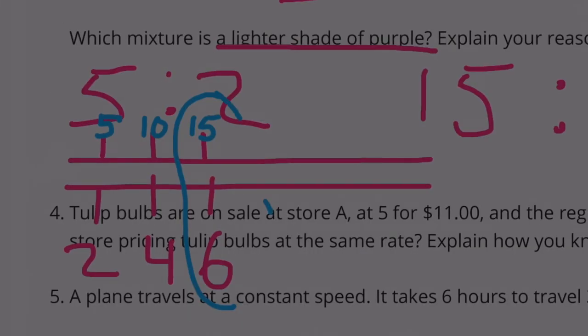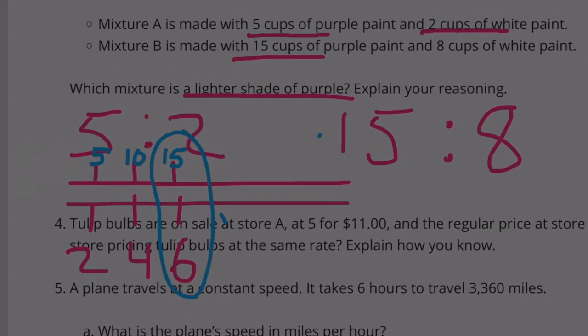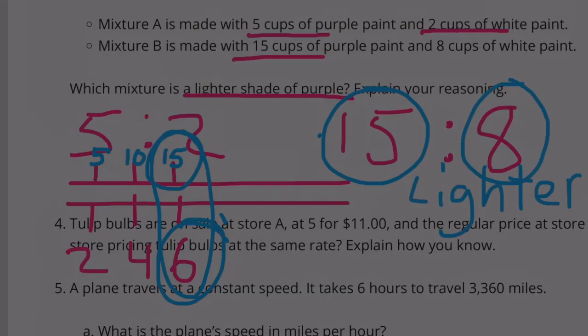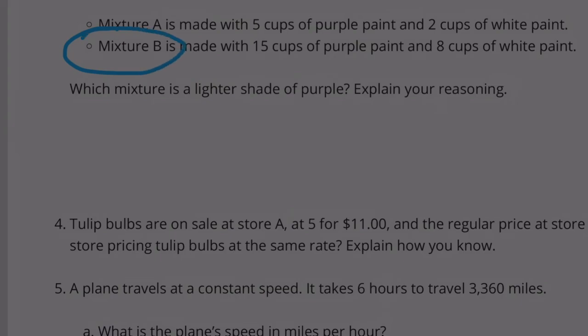At the 5 to 2 ratio, you would end up with 15 cups of purple paint to 6 cups of white paint. So with 6 cups of white paint mixed with 15 cups of purple paint, you would actually have a darker shade than with 15 cups of purple paint mixed with 8 cups of white paint. This would be the lighter shade. Mixture B is the lighter shade.